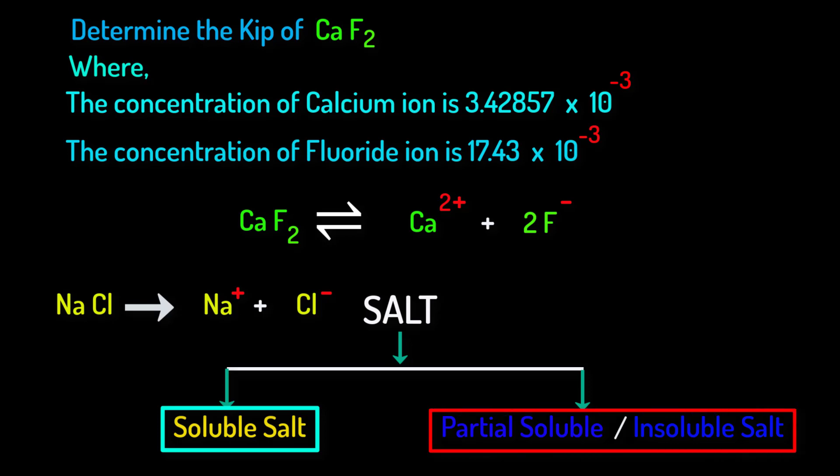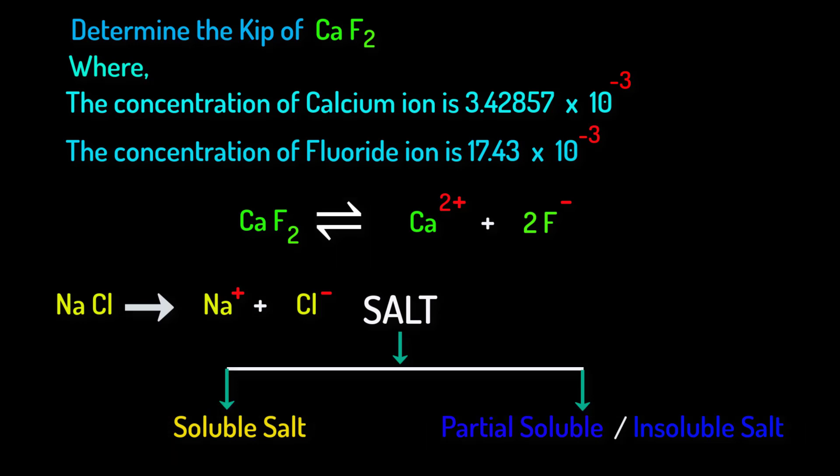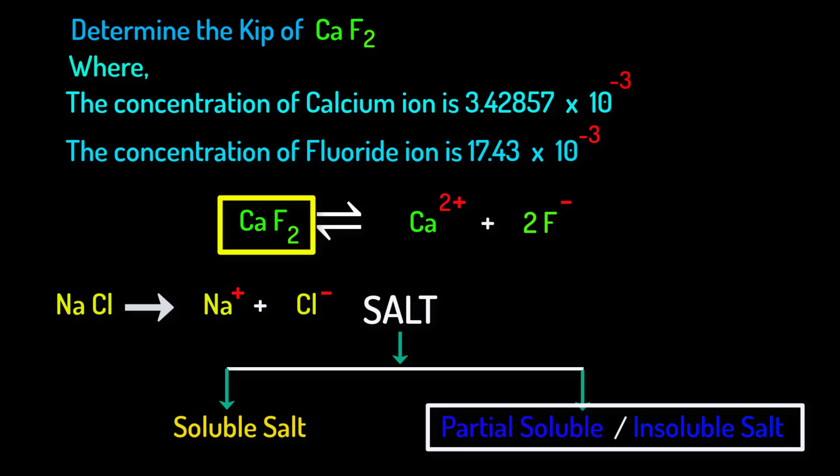For partially soluble salts we use this two sided arrow. Because this type of salts do not dissolve in water completely. Only a few portion of partially soluble salts dissolve in water and can become reactant again. Do remember generally we will not get this type of salts given in the question paper. We will get only these type of salts in the question paper. As this calcium fluoride is a partial or poor soluble salt we will have to use this reversible symbol.